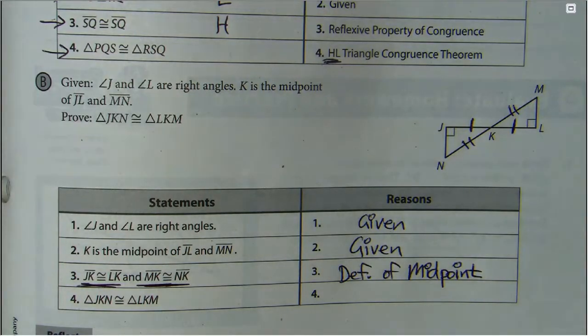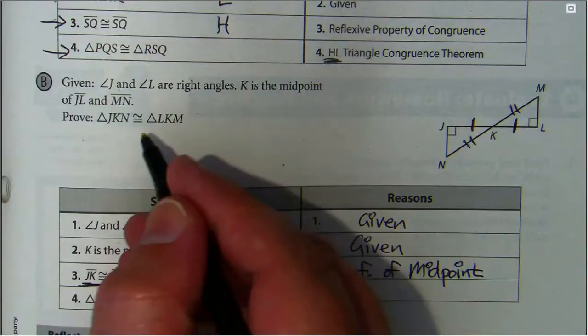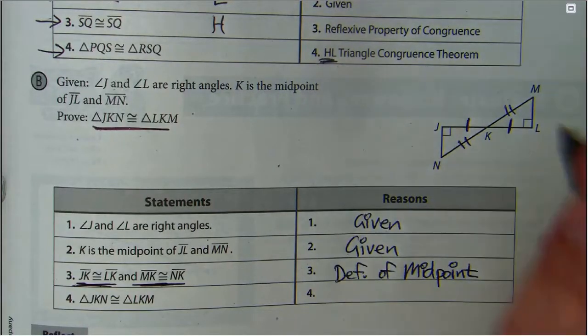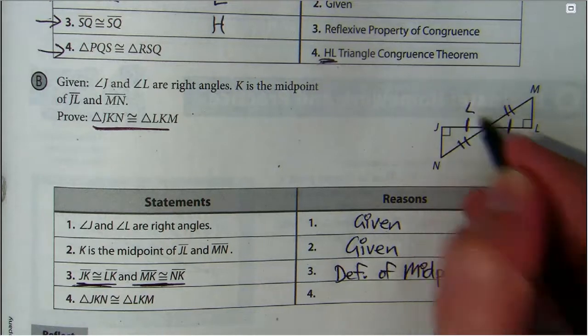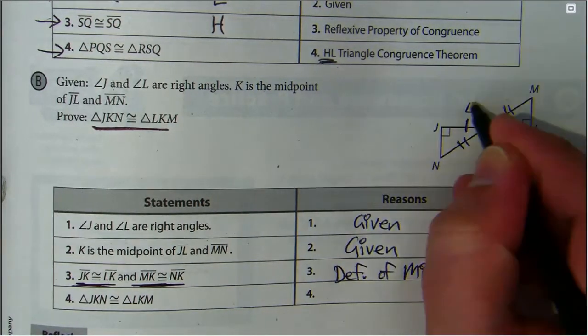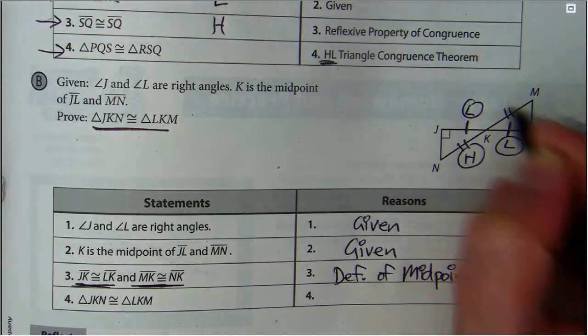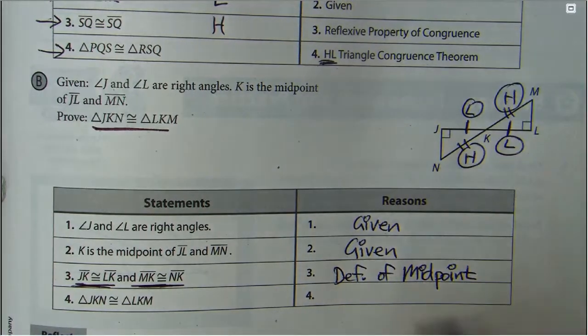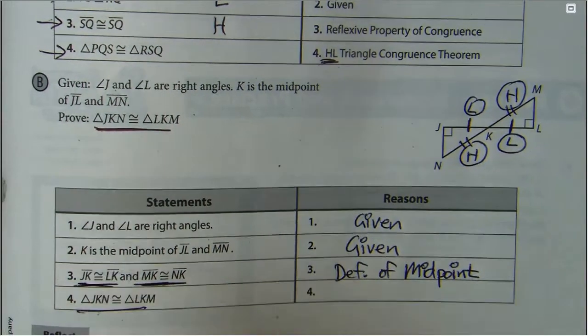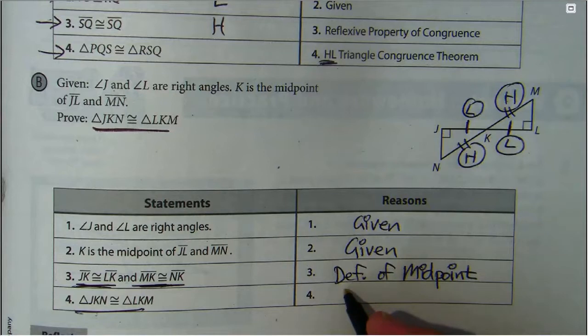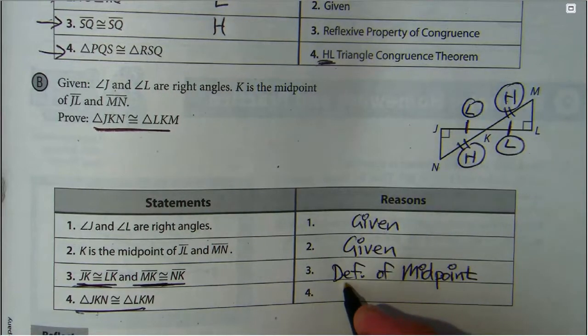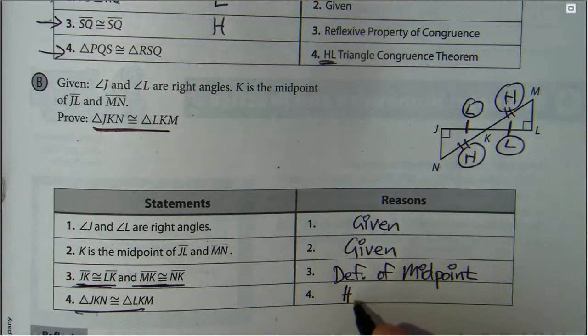Jose, what's our last reason for step four? What do they want us to prove? Jose, did we get a leg? Did we get a hypotenuse? So what's the reason that these two triangles are congruent? Done. There you go. Good job.